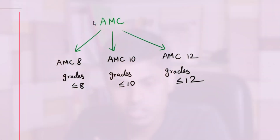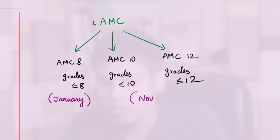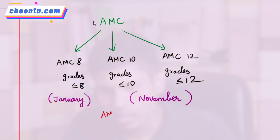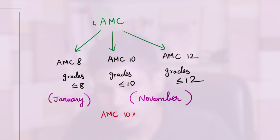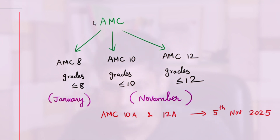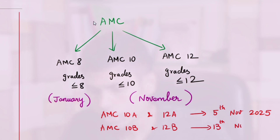For the dates of these exams, AMC 8 is conducted in January of each year, whereas AMC 10 and 12 are conducted in November. They happen on two different dates: AMC 10A and AMC 12A happen together — for example on 5th November 2025 — and AMC 10B and AMC 12B happen on 13th November 2025, almost one week apart.